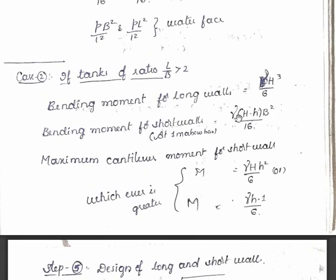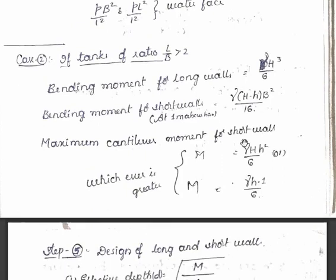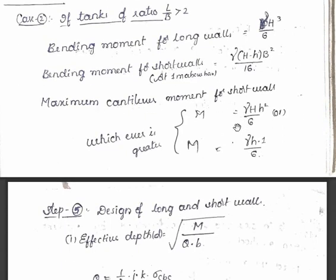At this point, so that is given as this formula: gamma into (H minus small h) into B²/16. So you know all the components here, you can easily find it out. So maximum cantilever moment for short walls we will take it as this much. So we have to compare these two values and we have to consider whichever is greater.